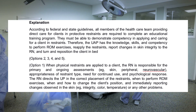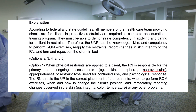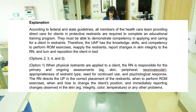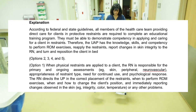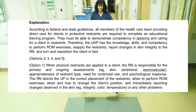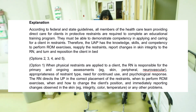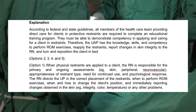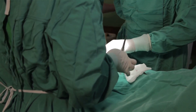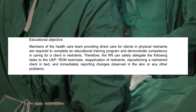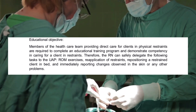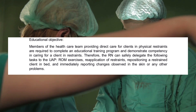Option 1 is incorrect. When physical restraints are applied to a client, the RN is responsible for the primary and ongoing assessments of skin, peripheral neurovascular status, appropriateness of restraint type, need for continued use, and psychological response. The RN directs the UAP in the correct placement of the restraints, when to perform ROM exercises, when and how to change the client's position, and immediately reporting changes observed in the skin integrity, color, temperature, or any other problems. The correct answers are options 2, 3, 4, and 5.